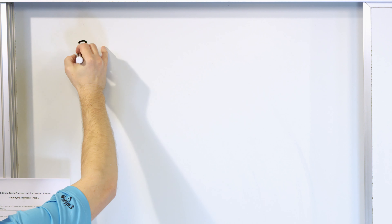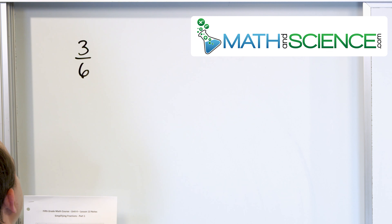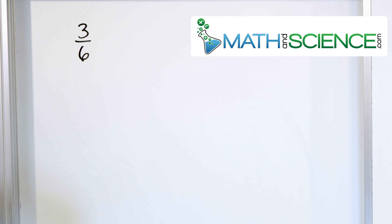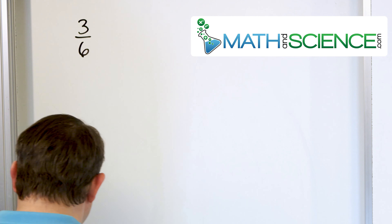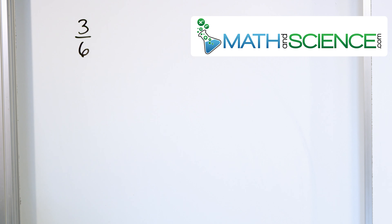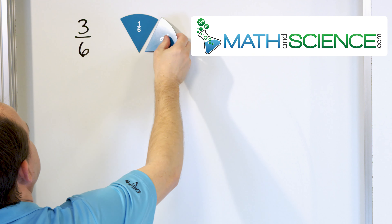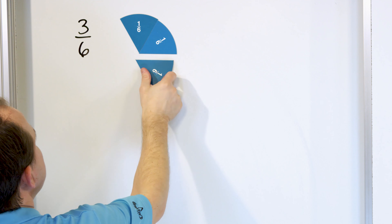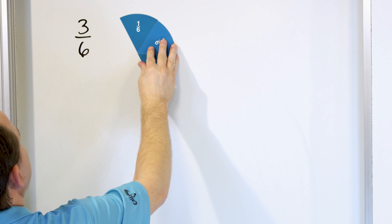What about the fraction three-sixths? We want to do what we call simplifying that fraction. What is three-sixths? Let's take a look at what that actually is. Here's one-sixth, two-sixths, three-sixths. This is three-sixths of a fraction.